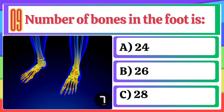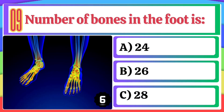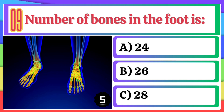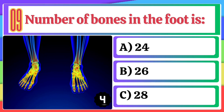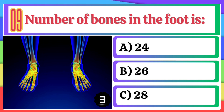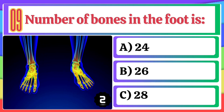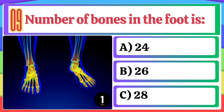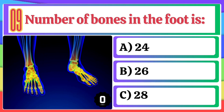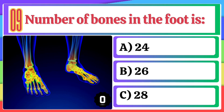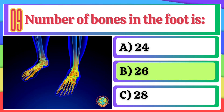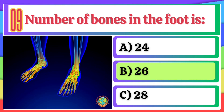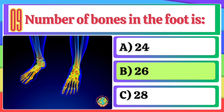Number of bones in the foot is: A) 24, B) 26, C) 28. The correct option is B, 26.